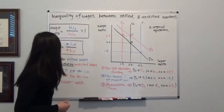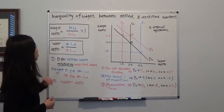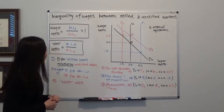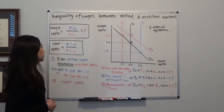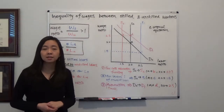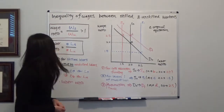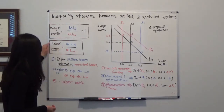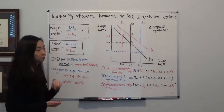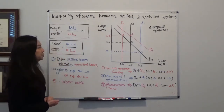We are going to first define wage ratio and labor ratio. Wage ratio is the wage of skilled workers divided by the wage of unskilled workers, and that number is going to be greater than 1 because the market rewards you for your skill. Labor ratio is the number of skilled workers divided by the number of unskilled workers.